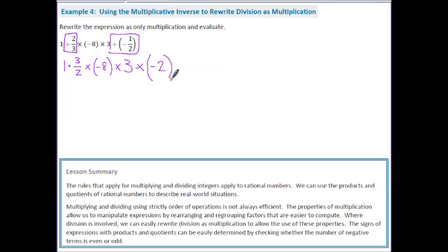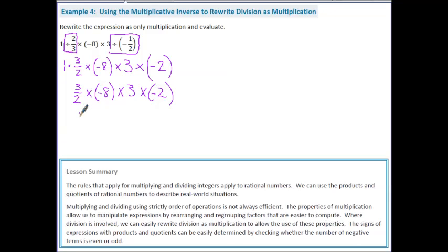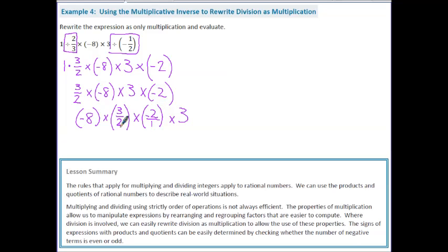Now I want to start looking for ways to make this problem easier. I think it's pretty easy to do 1 times 3/2, which is 3/2. The other thing that makes this hard is the fraction, but notice this has a 2 on the bottom and this has a 2 on the top. So let's use the commutative property to switch the order and put those next to each other. I would have: negative 8 times 3/2 times negative 2 times 3. I can turn this into a fraction — 2 on the top and 2 on the bottom — which cancels to become 1. There's a negative here, so this is negative 1. Now I don't have fractions anymore, which makes this a lot easier.